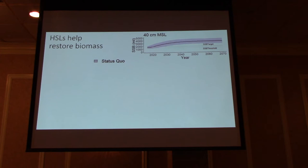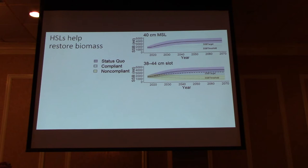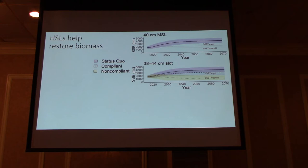Looking at population simulation results: first, this is how the stock is expected to respond to the 20% reduction taken in 2018 without any changes in minimum size — using the minimum size limit and taking that reduction, we see the stock recovers. Now looking at the smaller slot, in the fully compliant scenario the dashed line shows some recovery of spawning stock biomass, but it's not as dramatic as hoped and it's below the status quo trajectory. In the non-compliant scenario, the stock crashes — so that's not a great choice.